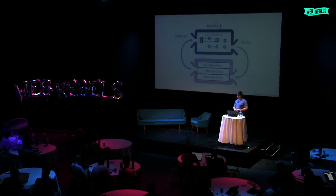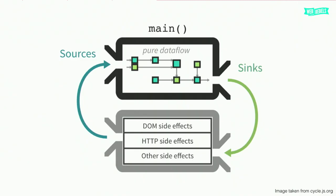How does CycleJS work? This is from the official website. As you can see, data flow just circling around. They call the external connections 'drivers' — DOM, HTTP, or anything else can be a driver. From the drivers, we send streams as sources into our main function. From the main function, we return streams back to our drivers to re-render the DOM, send more HTTP requests, or update web sockets. Inside the main function we have pure data flow: streams came in, we create new streams from them, and return them back. Everything just circling around.